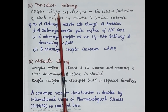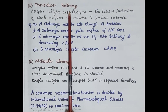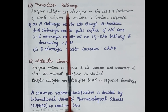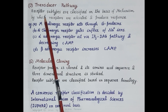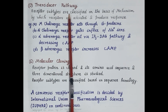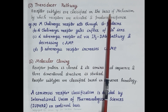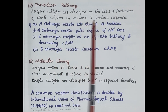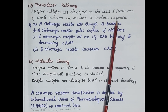Another important criterion for classification of receptors is based on the transducer pathway. When a ligand binds to a receptor, it induces a number of biochemical reactions inside the cell that lead to the generation of a physiological response. The transducer pathway is the mechanism by which the receptor is activated and produces a response. Receptor subtypes are classified based on these transducer pathways.